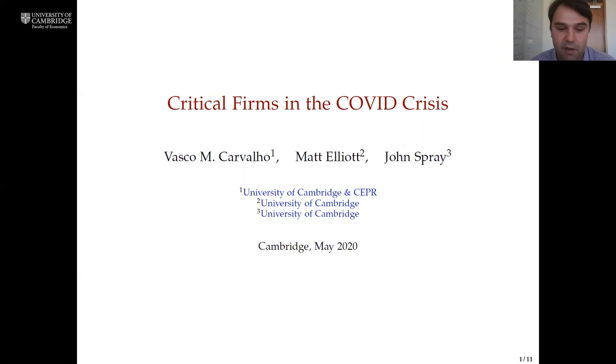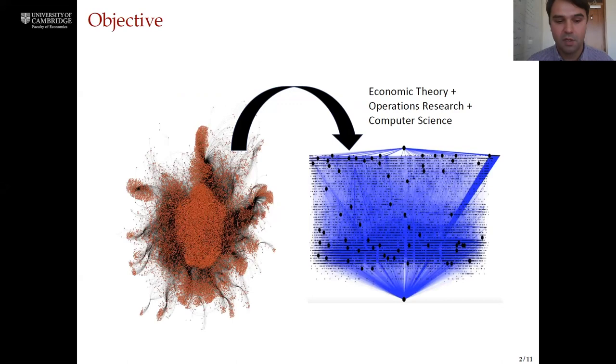Thank you Meredith, and so this is joint work with Vasco Cavaglio and John Spray who are both also at Cambridge. I'm going to talk today about how some tools we developed in a different project can be repurposed to think about which firms are critical for meeting governmental production goals in the context of the current crisis.